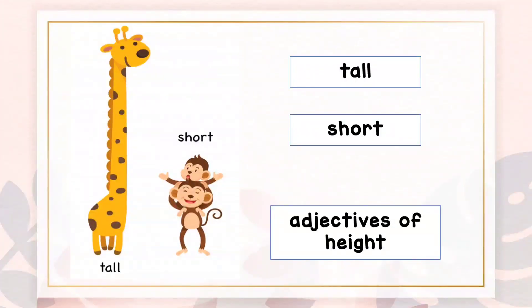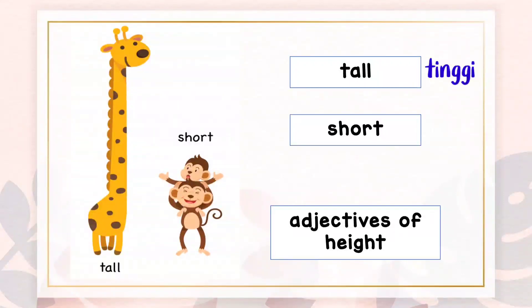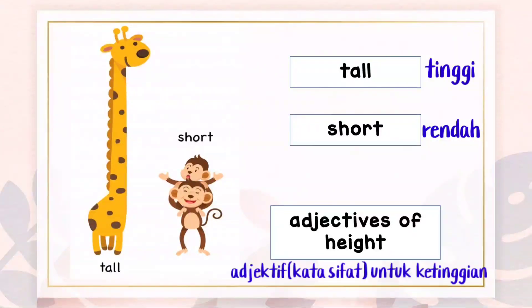Today we're going to talk about tall and short. Tall and short are adjectives of height. Tinggi dan rendah adalah kata adjektif bagi ketinggian.